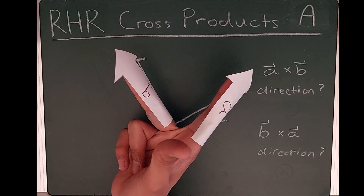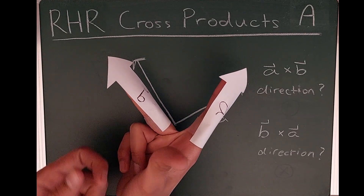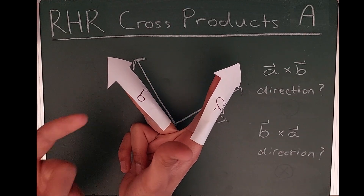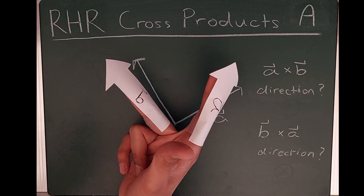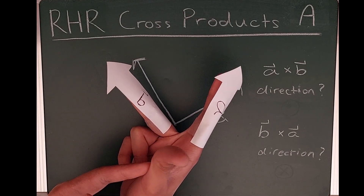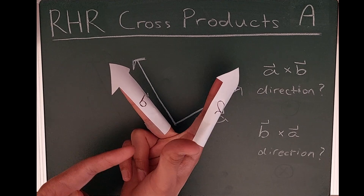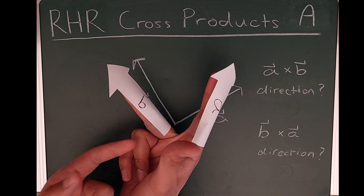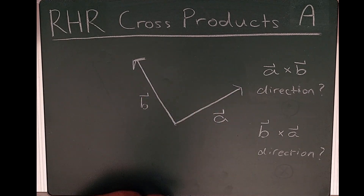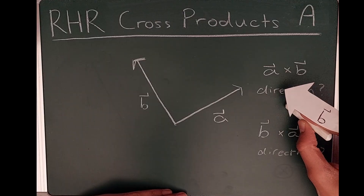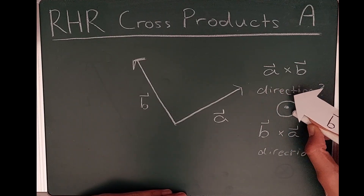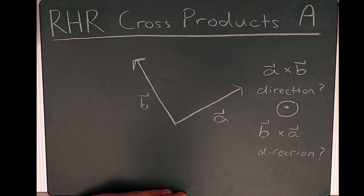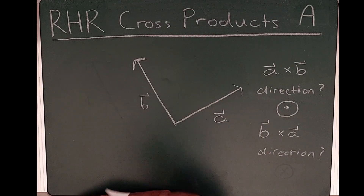Now stick your thumb out, and that is the direction of A cross B — the direction your thumb points. In this case the thumb is pointing up, out of the chalkboard, out of the page. So the direction of A cross B is out of the page, which we represent using the arrow convention with a dot. You can check out the previous video on cross products where we cover that fully.